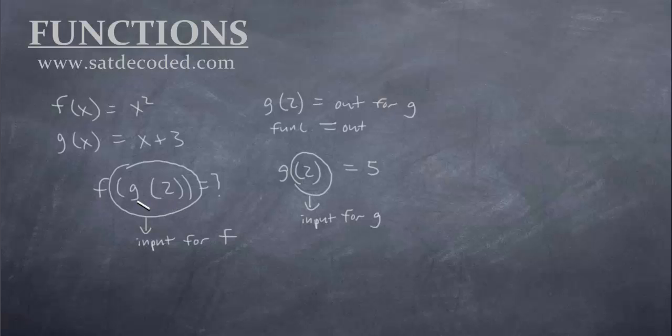So wherever we see g(2) now, we can replace this whole thing with 5. So really, the question is asking, what is f(5)? So according to our formula, f(5) is going to be 5², which is 25.